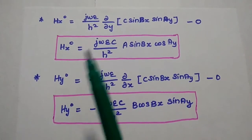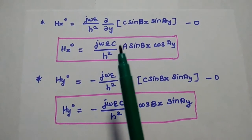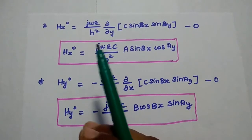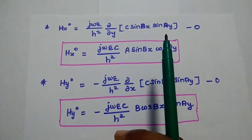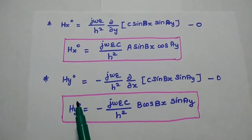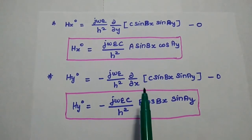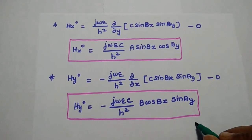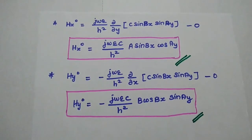Next, Hx = j omega epsilon over h squared times dou/dou y of C sin bx sin ay minus 0. Differentiating with respect to y gives Hx = j omega epsilon C a over h squared times sin bx cos ay. Finally, Hy = minus j omega epsilon over h squared times dou/dou x of EZ. Differentiating gives Hy in terms of b cos bx sin ay. These are all the field components of TM waves.